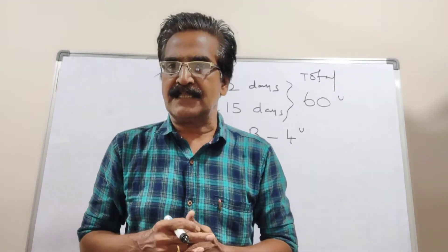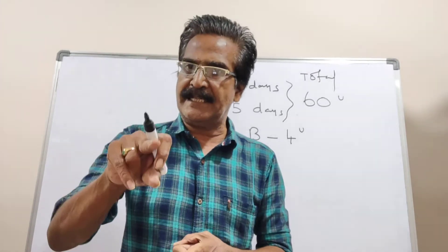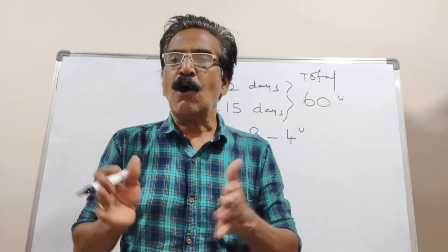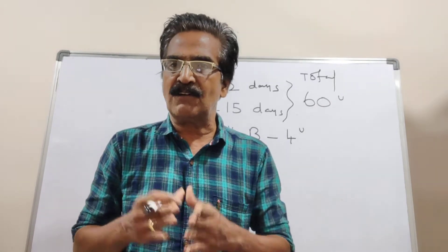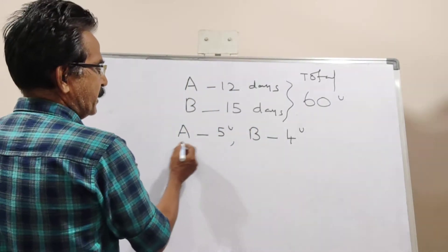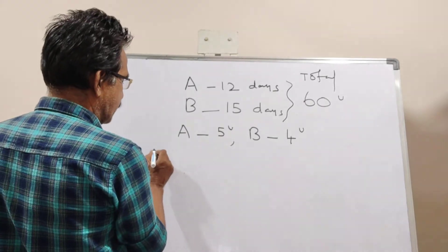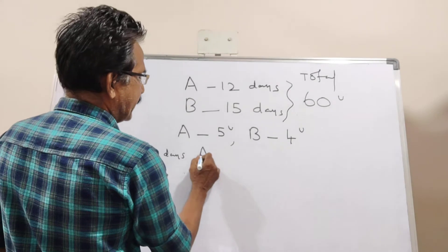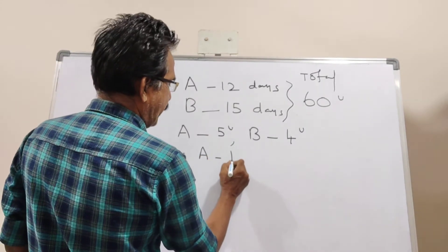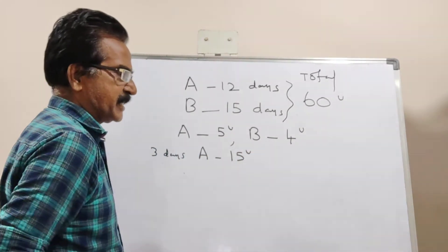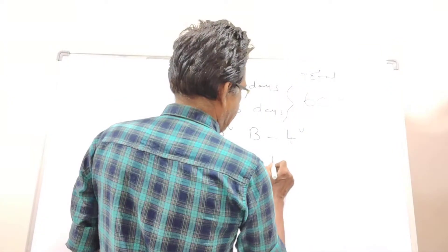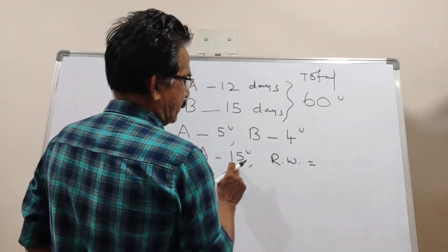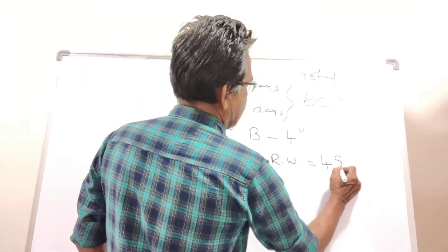A started the work, and after 3 days B joined him. In these 3 days, how many units of work was done by A? A does 5 units per day, so in 3 days A completes 15 units of work.